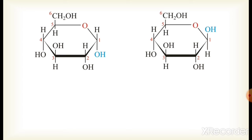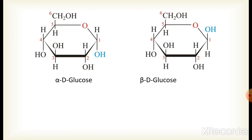Look at the position of the hydroxyl group in both structures at carbon number 1. This carbon number 1 is known as the anomeric carbon atom. If the hydroxyl group is present below carbon number 1, then this condition is known as alpha D-glucose. And if the hydroxyl group is present above the anomeric carbon — carbon number 1 — then this form is known as beta form or beta glucose.